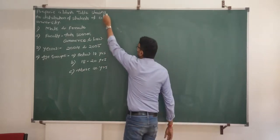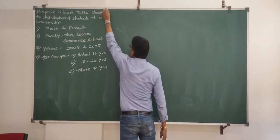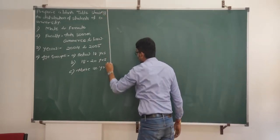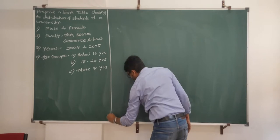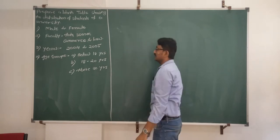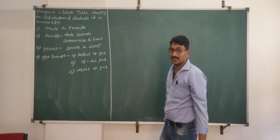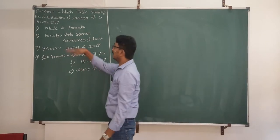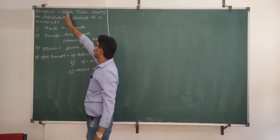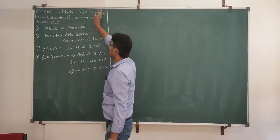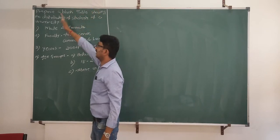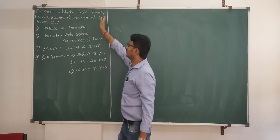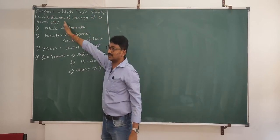We will see one more problem on blank table. I will read out the problem once, then we will go. Again in this problem, we have to prepare a blank table showing the distribution of students of a university.